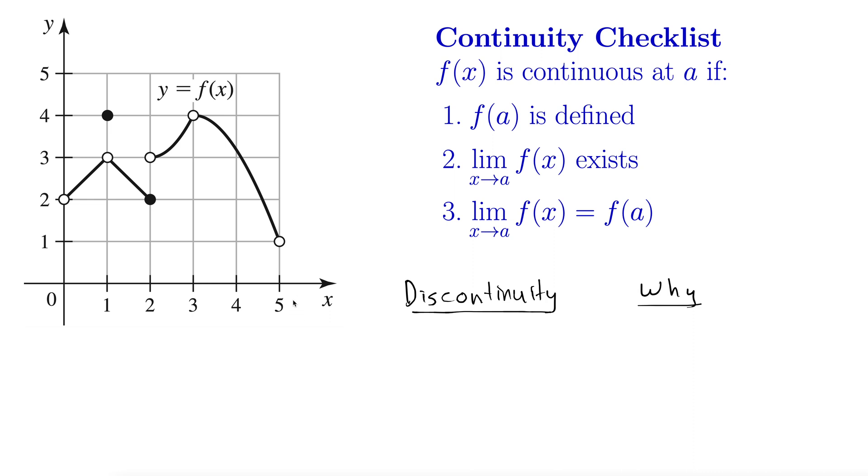So let's leave those endpoints be and just look at all the behavior on the interior. And let's move from right to left. So as we move in here from right to left, the first one that I'm seeing is this open circle here. So we would say that this is a discontinuity at x equals 3. Why?